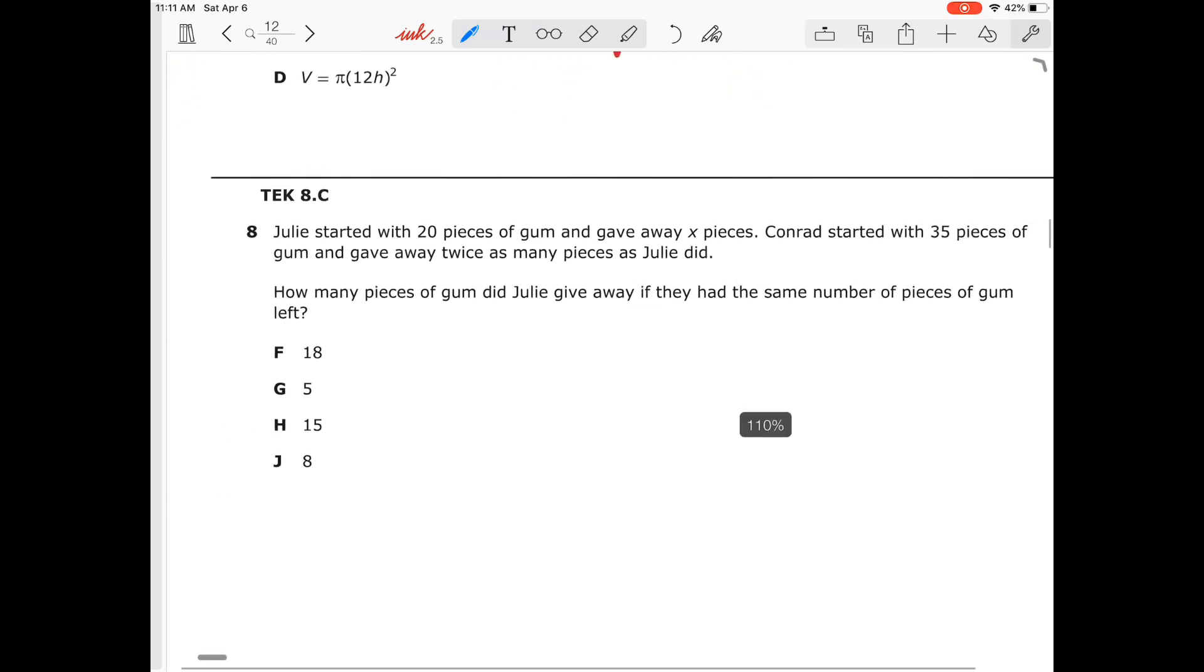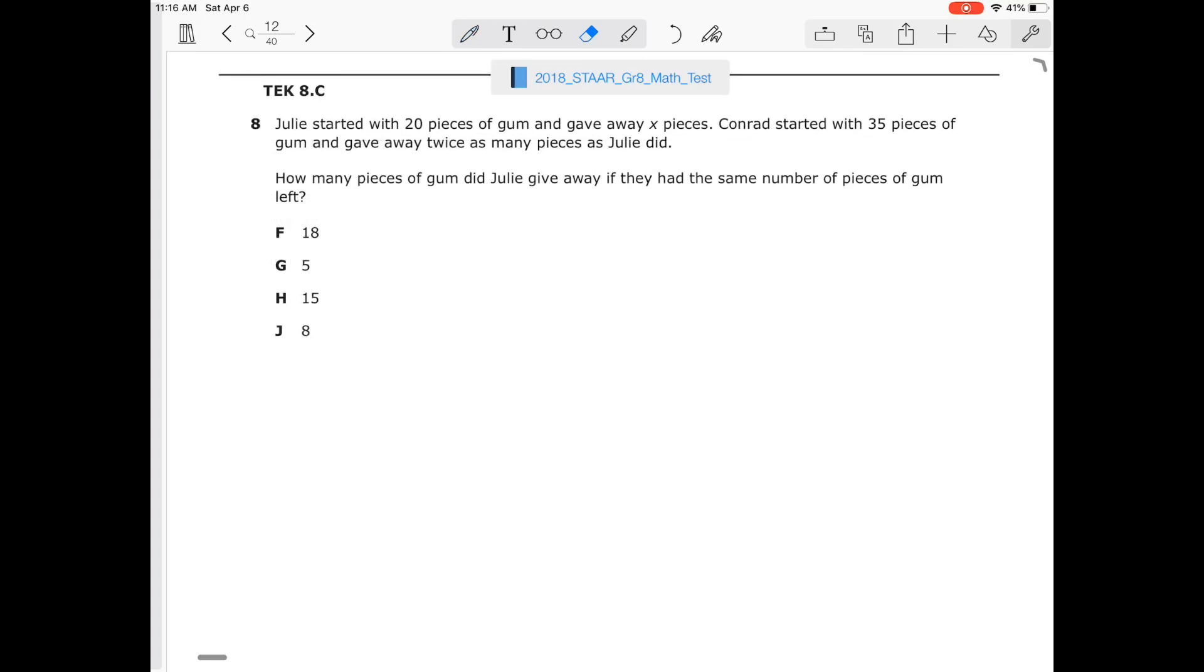I will go over number eight in the next video. Alright, so I'm going to go over number eight, TEK 8.C. Julie started with 20 pieces of gum and gave away x pieces. So 20 pieces of gum minus x pieces, that's Julie. And then Conrad started with 35 pieces of gum. So 35 and then gave away twice as many as Julie did. So that's going to be minus 2x. That's Conrad.